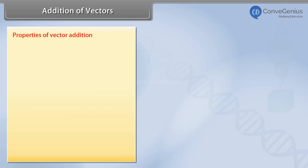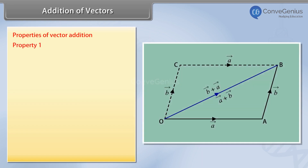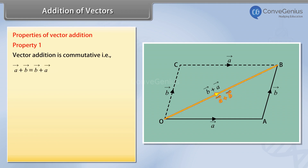Properties of vector addition. Property 1: Vector addition is commutative. That is, vector A plus vector B equals vector B plus vector A.